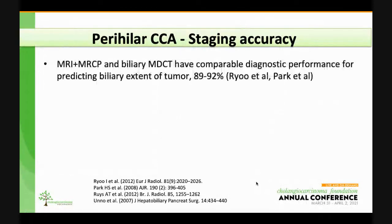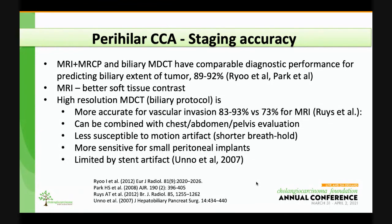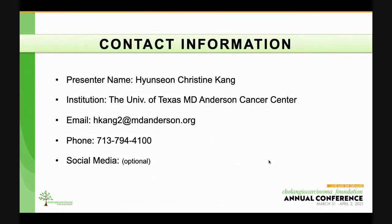In conclusion, MRI and biliary CT have comparable diagnostic performance for predicting the biliary extent of tumor. MRI has better soft tissue contrast. High-resolution biliary protocol CT is more accurate for vascular invasion, can be combined with a CT of the chest and pelvis for a full staging examination, is less susceptible to motion artifact due to a shorter breath hold, and is more sensitive for small peritoneal implants. However, it can be limited by stent artifact, and it's important to try to get high-quality imaging before placement of a stent. Thank you for your attention.